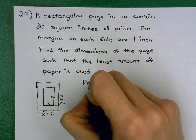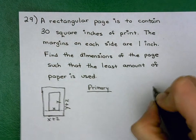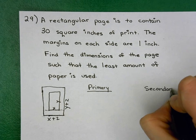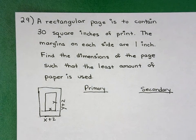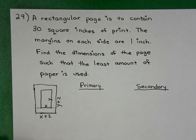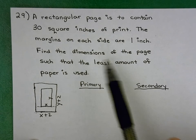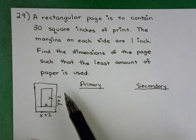Next up, we need a primary equation and a secondary equation. My primary equation is what am I looking to maximize or minimize? What am I looking to optimize? Well, in this particular problem, they want us to find the dimensions of the page such that the least amount, minimize, least amount of paper is used.